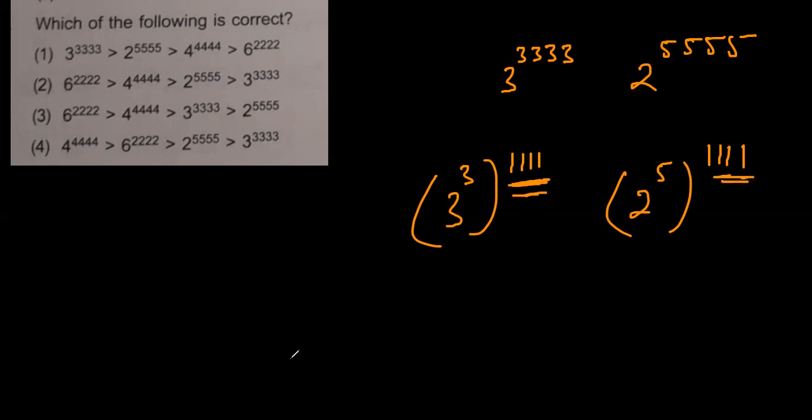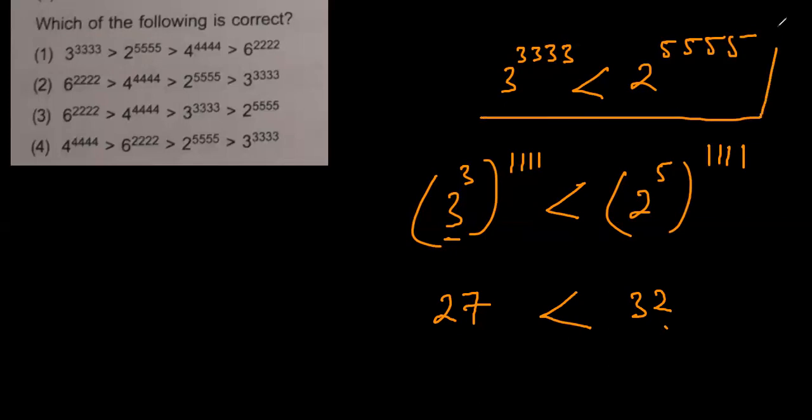Three to power three is 27, and two to power five is 32. We can easily see that 27 is smaller than 32, but they say that this is bigger. The actual thing is three to power 3333 is smaller than two to power 5555, but they have written it the other way around. So the first statement is wrong.